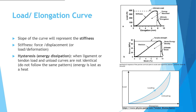One important characteristic of the load elongation curve for ligaments and tendons is that the loading and unloading curves are not identical — they do not lie over each other. This means there is energy dissipation, referred to as hysteresis. In the load elongation curve of ligaments and tendons, the loading and unloading paths differ, and some energy may be lost as heat.